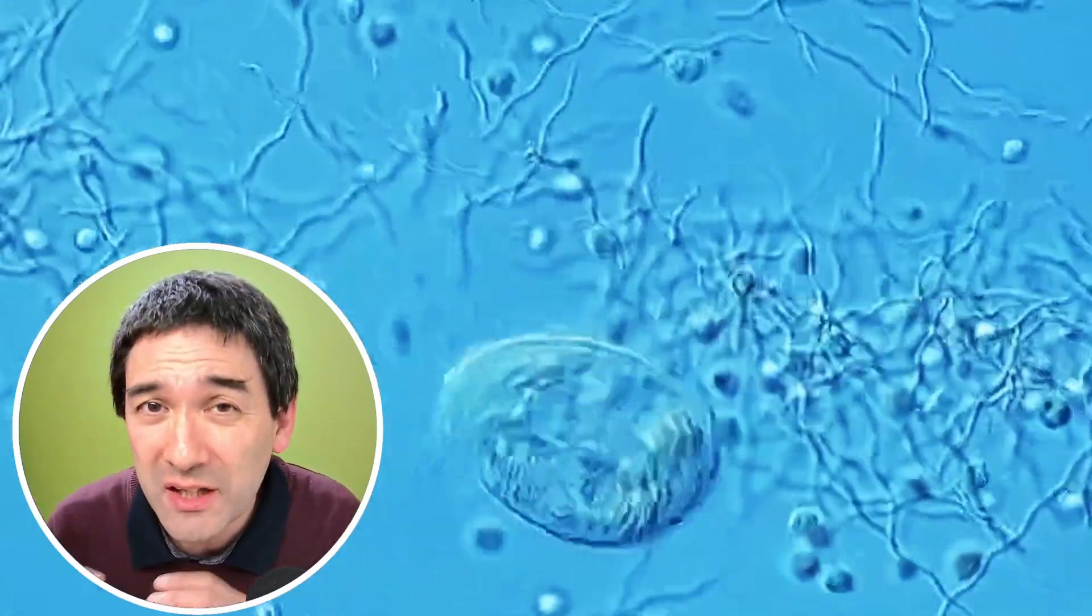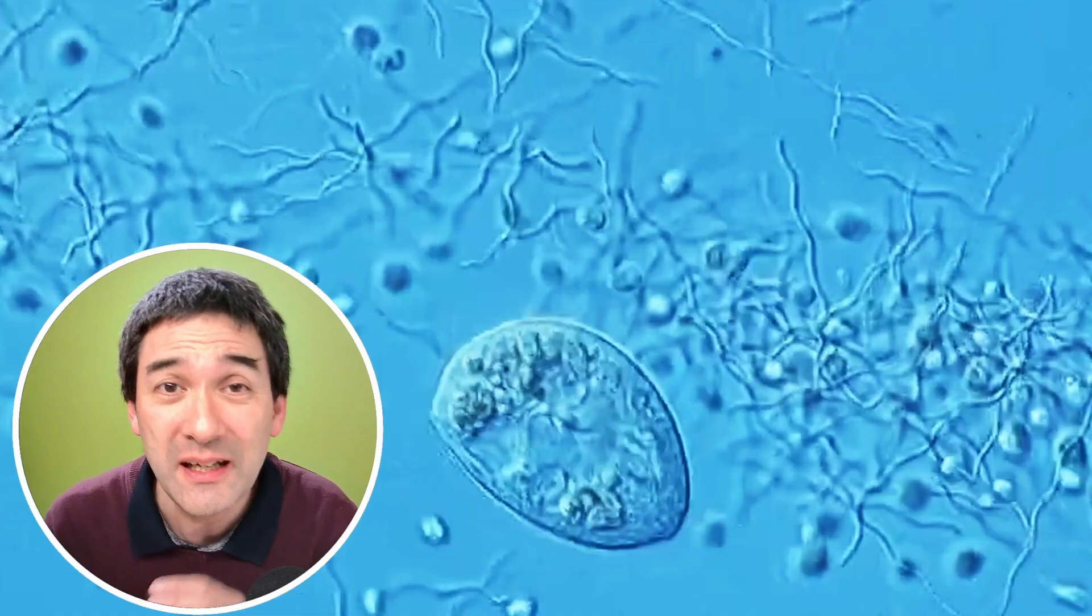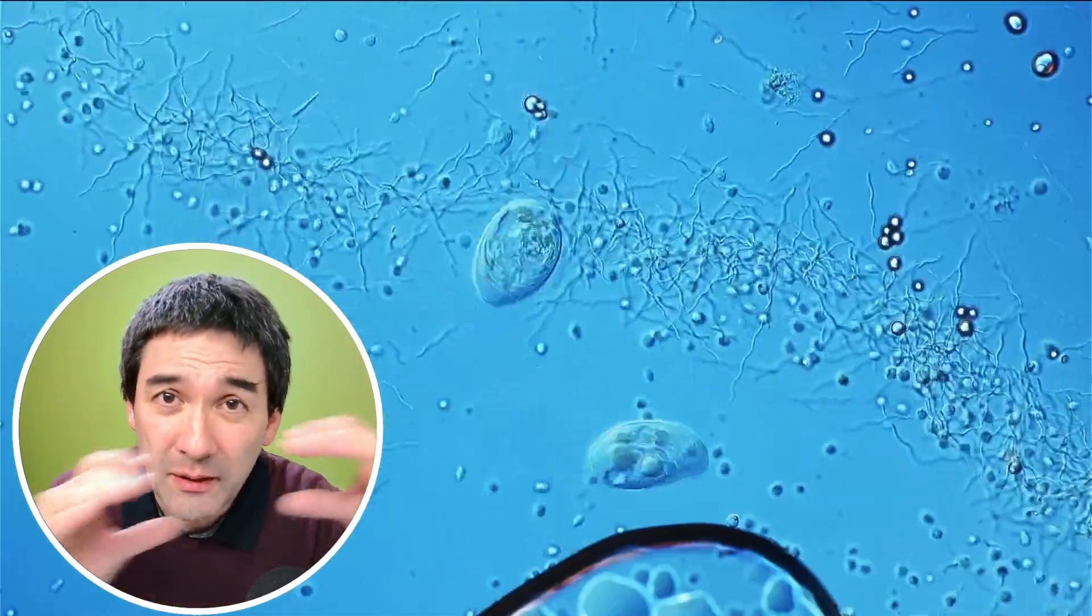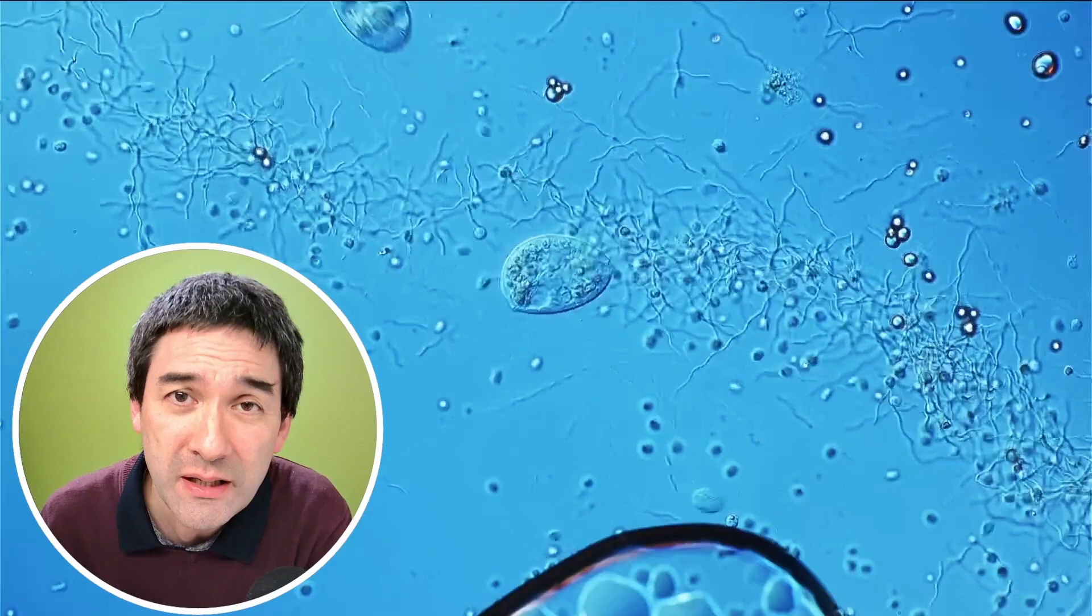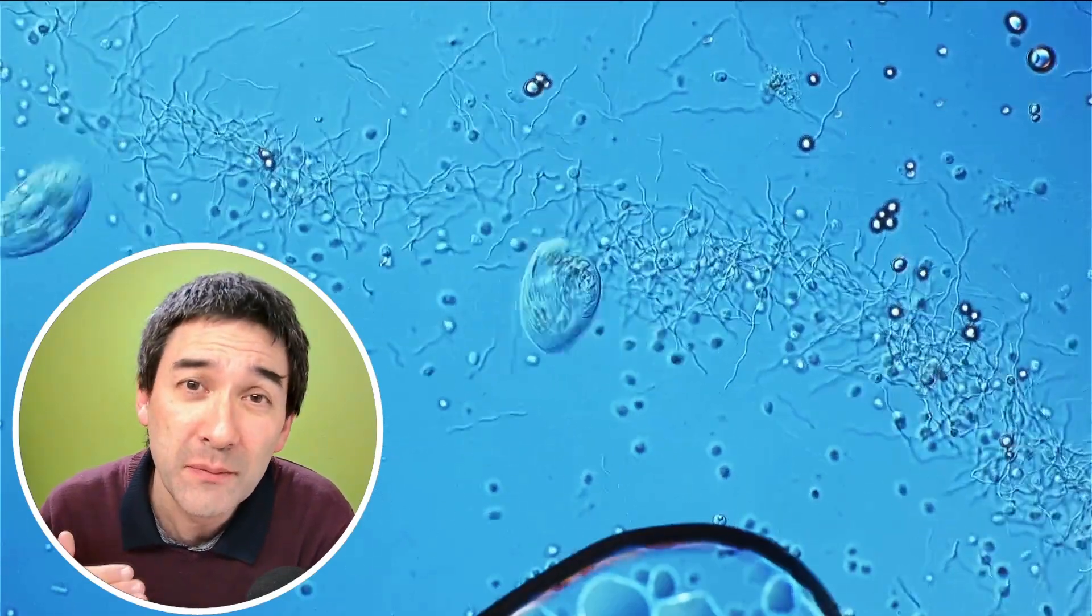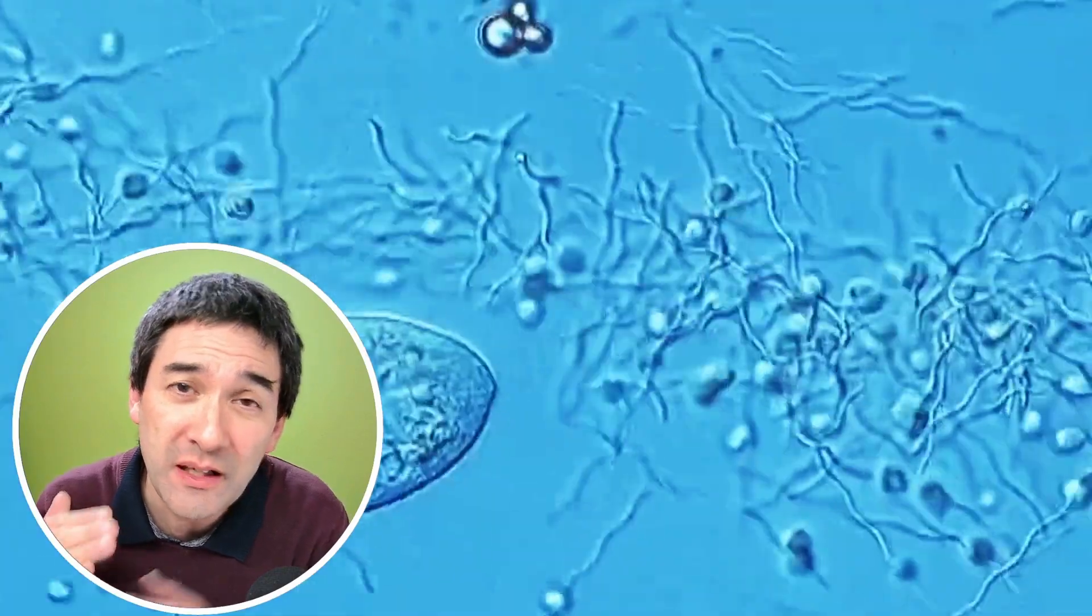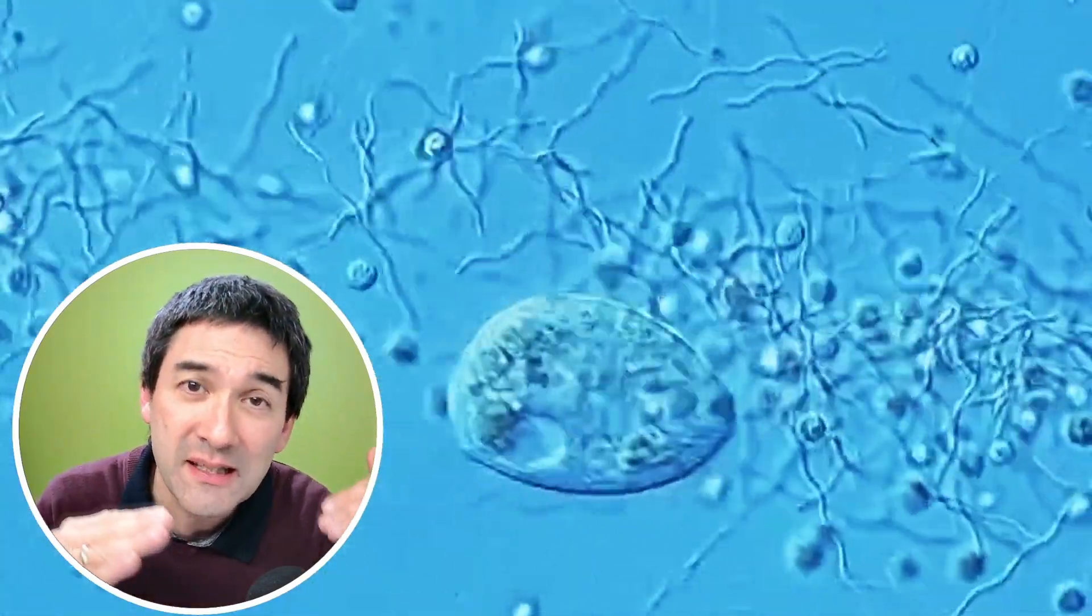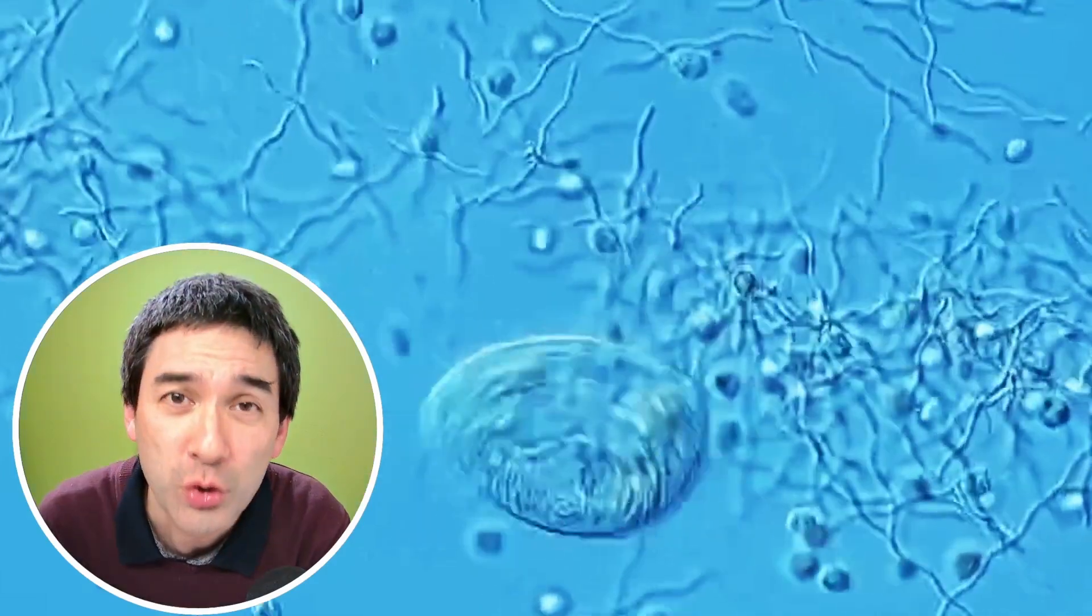Now you might have noticed that those bacteria and also those ciliates, they like to gather around in a strip right through the center of the field of view. And this actually is quite common when there is a concentration gradient of oxygen. So essentially what they do is those bacteria will sometimes actually move along the slide towards an area of higher oxygen concentration.